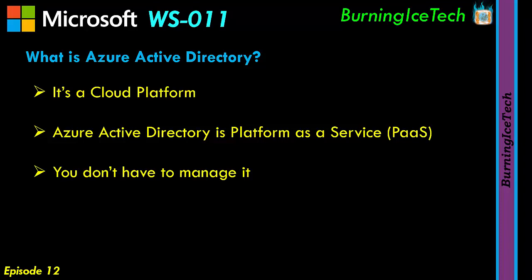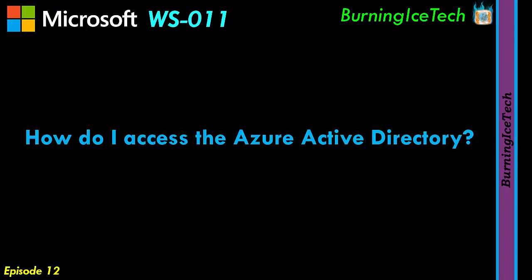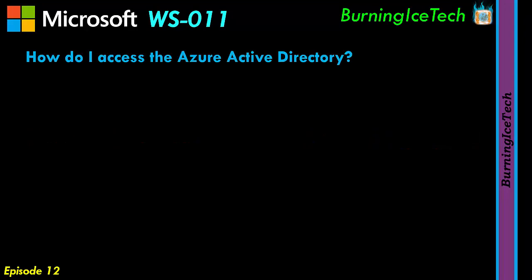By now you're probably getting very curious as to how you're going to access Azure Active Directory. With regards to accessing it, this can be achieved via two ways. You can either go to the Azure portal, which is the method I'm going to demonstrate, or you can access it via the Office 365 Admin Center.